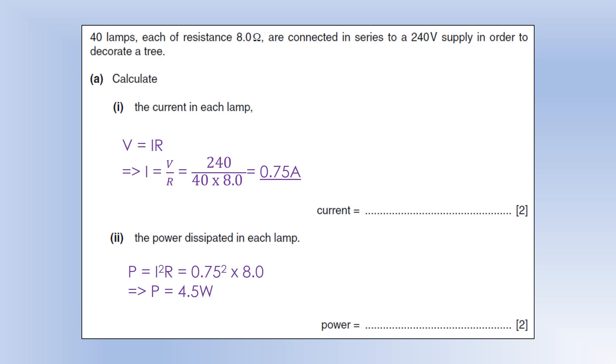We can also use P equals IV, but we have to remember the potential difference is going to be equally split between all 40 lamps, so we're going to do 240 divided by 40 to get the potential difference. Same result.